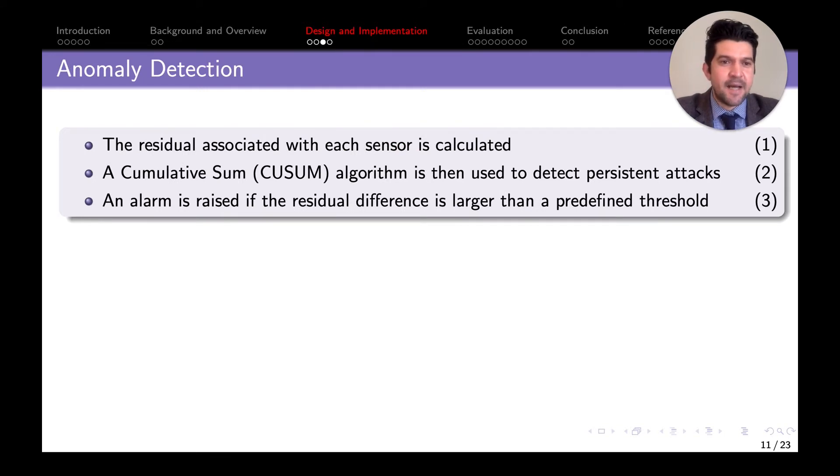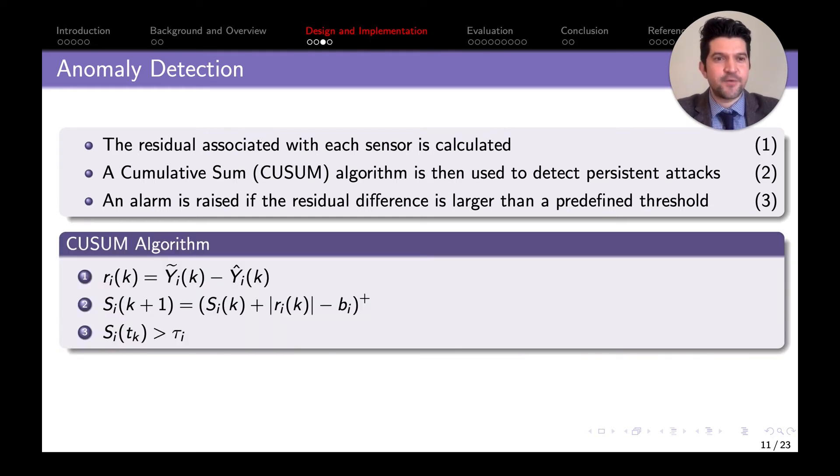For anomaly detection, we're using a CUSUM algorithm. We calculate the residuals between the two measurements—the measurement from the system and the measurement from our estimated state. We compare those measurements and keep track of anomalies over time. If the difference is greater than our observed normal behavior of the device, we keep accumulating them. If this change is consistent and goes over a threshold gained from observing normal behavior, we can say the system is under attack.